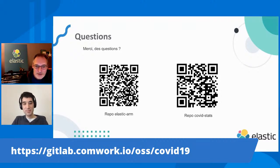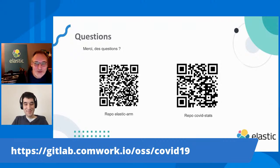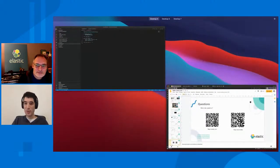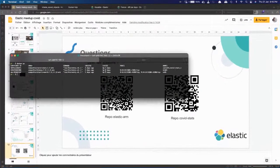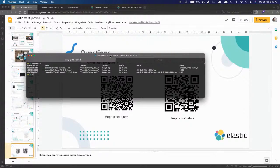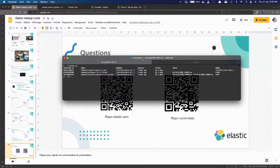Merci beaucoup Idriss, c'est super intéressant. C'est assez impressionnant de voir que Kibana, qui est quand même assez gourmand, et Elasticsearch, tiennent tous les deux sur une machine, même avec très peu de données. Ça tient depuis trois jours sans interruption, en tournant en continu. Sur l'autre projet, on a séparé en deux Raspberry Pi un peu moins puissants.